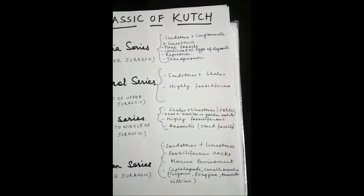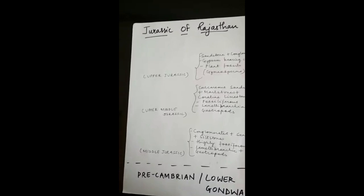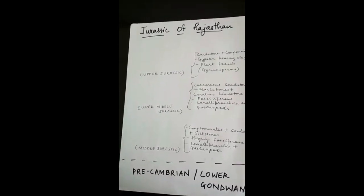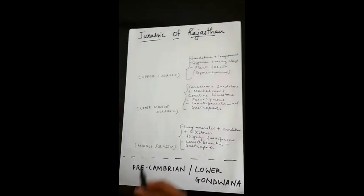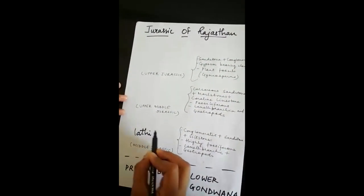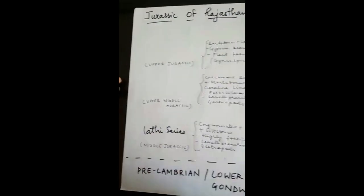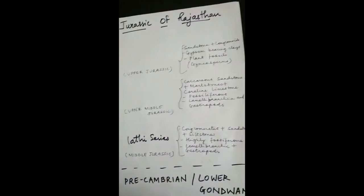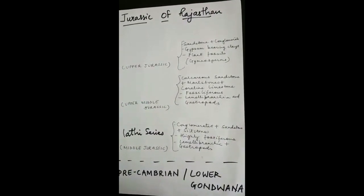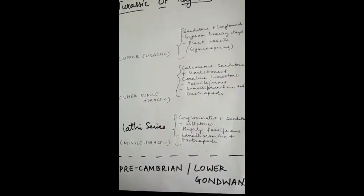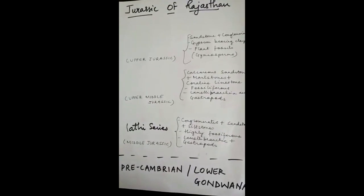The Umia series represents continental type deposits due to regression and transgression. It is divided into three series. The basement rock is of pre-Cambrian or lower Gondwana. Above this is the Lathi series, which was formed in the middle Jurassic, mainly consisting of conglomerates, sandstones, and siltstones. It is highly fossiliferous and contains lamellibranchia and gastropods.